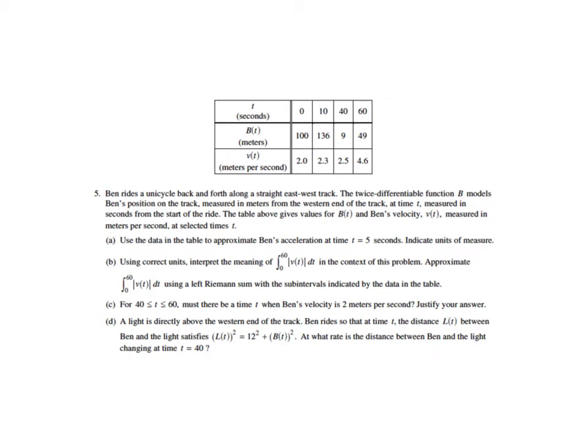In this question, Ben rides a unicycle back and forth along a straight east-west track. The twice-differentiable function B models Ben's position on the track, measured in meters from the western end of the track at time t, which is measured in seconds from the start of the ride. The table above gives values for B(t) and Ben's velocity, V(t), measured in meters per second at selected times t.